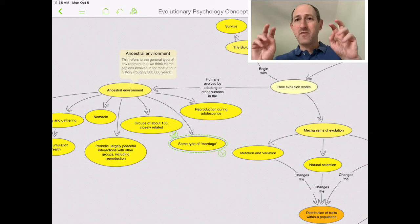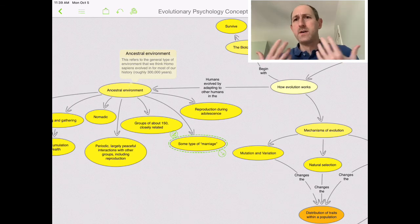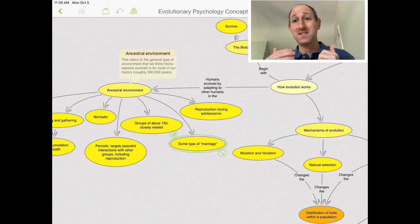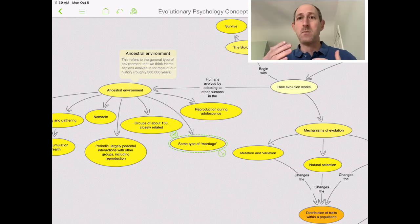A lot, some type of marriage. Marriage as we know it is certainly culturally defined, but we are what we call a pair bonding species, which means that generally speaking, males and females of our species do get together for long periods of time to invest in their children for their reproductive success.